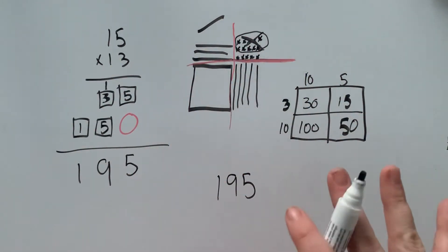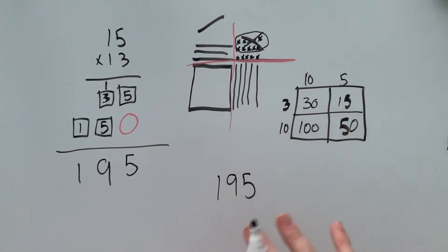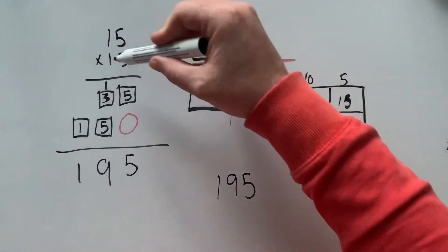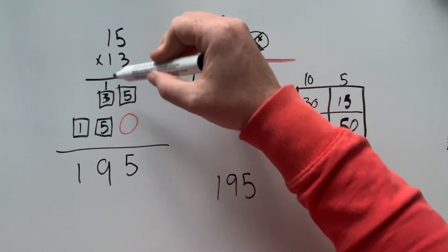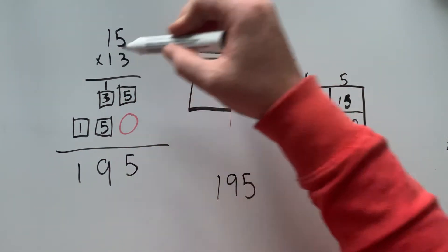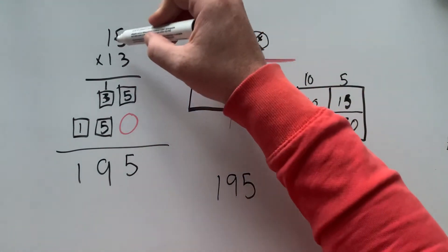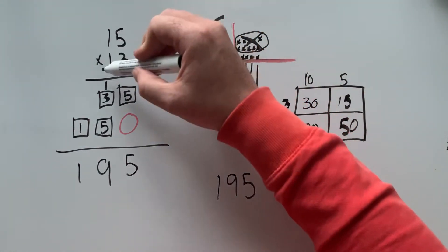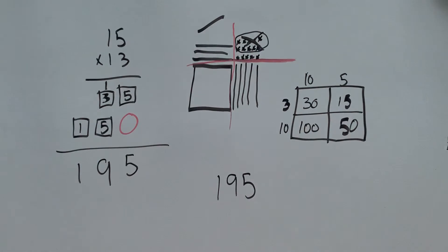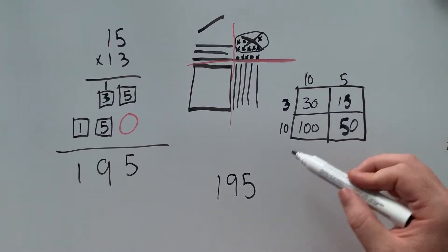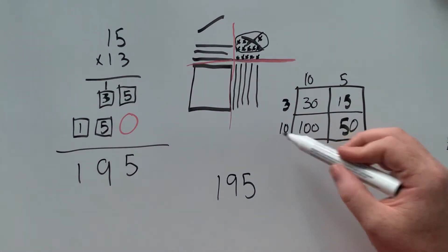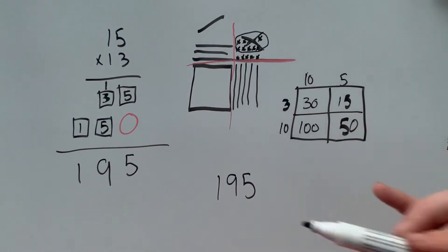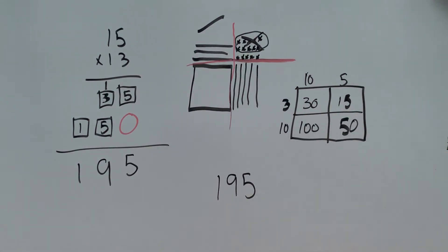So it builds up that understanding of what it is that we're doing — it's not abstract. You may notice that I say it's not 1 times 5, it's 10 times 5 is 50, just like you see here: 10 times 5 is 50. You'll want to be talking about the place value all the way through.